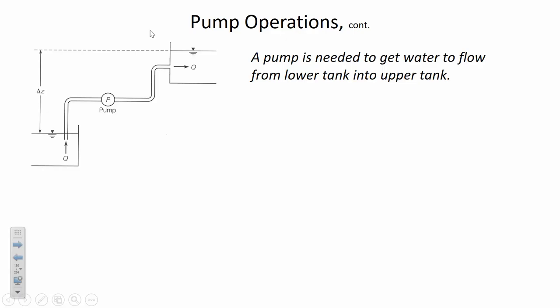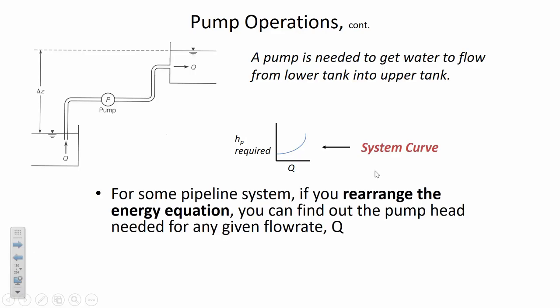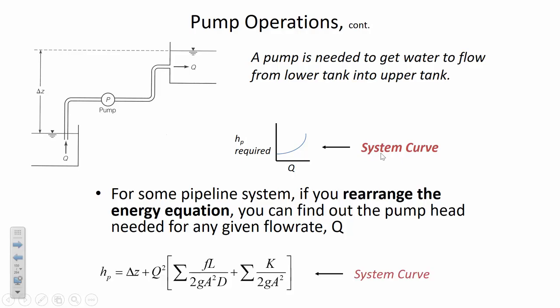The other half of the analysis is the system curve. For a case of lifting water from a lower reservoir to an upper reservoir, we rearrange the energy equation to express h_p — the pump head required — as a function of flow rate. Let me write the full energy equation: p₁/γ + z₁ + V₁²/2g + h_p = p₂/γ + z₂ + V₂²/2g + h_f + h_L.